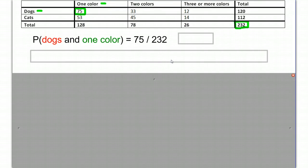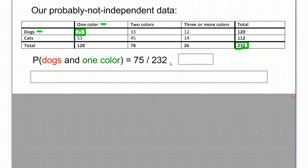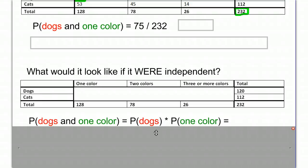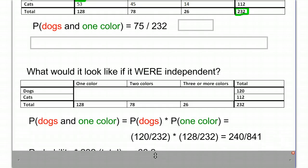But when we have independent events, we said that we can multiply the two separate probabilities together. So if we have two independent events, then we can say the probability of dogs and one color is just probability of dogs times the probability of one color. Now, the probability of dogs, we have 120 out of 232. Probability of one color, well, there's 128 animals of one color out of 232. If you take those and multiply them together in your calculator, it'll automatically reduce your fraction to something like this, 240 over 841.